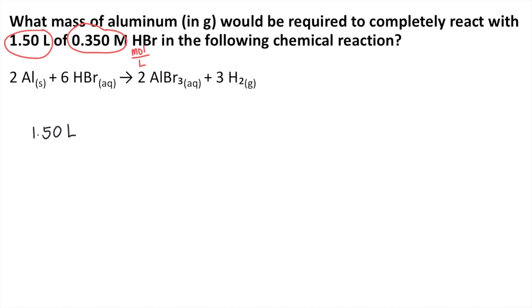So that means for every 1 liter of solution, there are 0.350 moles of HBr. So you can plug that into your solution. So for every 1 liter, there's 0.350 moles of HBr. So the liters would cancel out. Now you have moles of HBr.